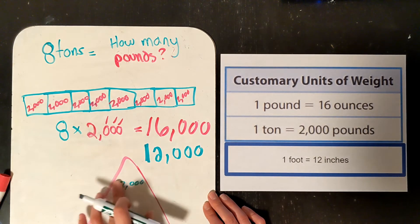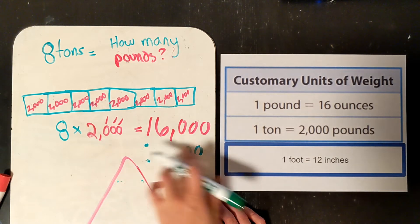And 12 divided by 2 is 6. So 6 tons for the average size elephant. When I say average, that means about normal. So not the biggest elephant, not the smallest elephant. Average.